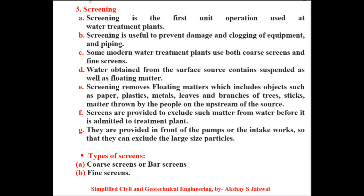Now we will discuss screening. Screening is the first unit operation used at water treatment plants. Point B: Screening is useful to prevent damage and clogging of equipment and piping. Point C: Some modern water treatment plants use both coarse screens and fine screens. Point D: Water obtained from surface sources contains suspended as well as floating matter. Point E: Screening removes floating matters which include objects such as paper, plastics, metals, leaves and branches of trees, sticks, and matter thrown by people on the upstream of the source.